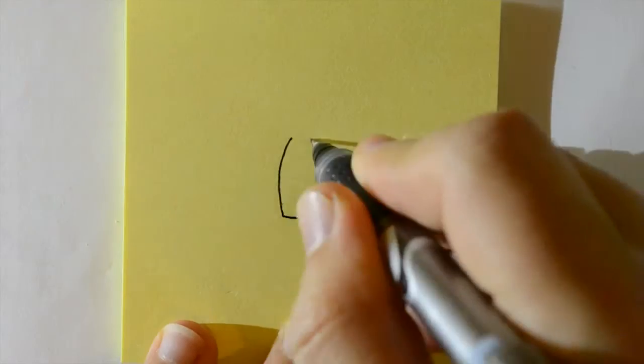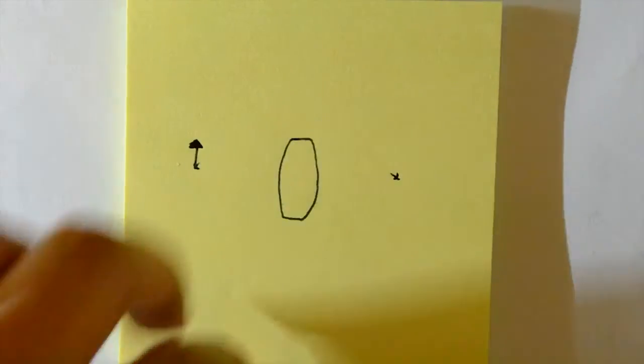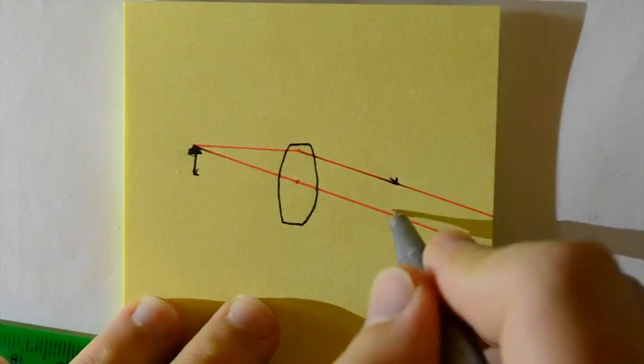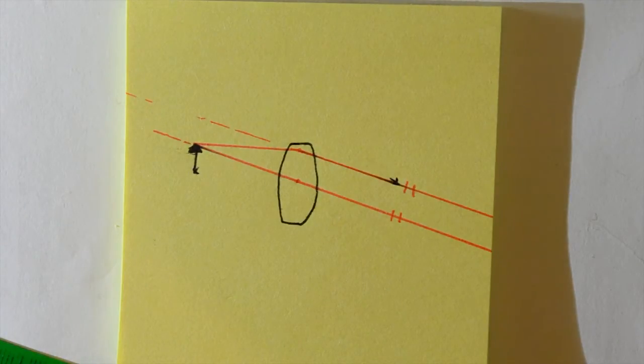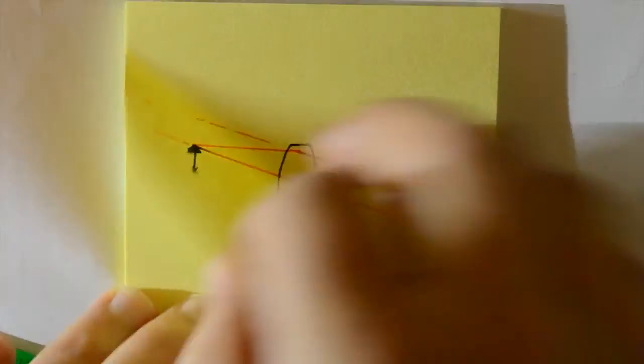Now we repeat, but this time with the object at the focal point. Notice that the lines that come out are parallel, which means that on either side of the lens, they converge to a single point. At this point, the image is magnified and unfocusable.